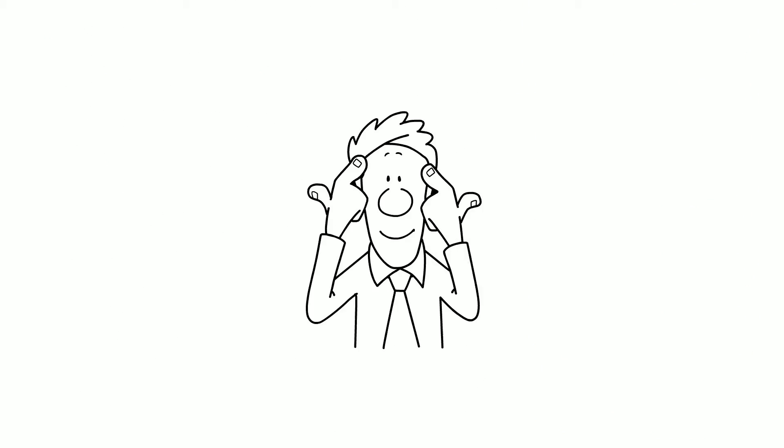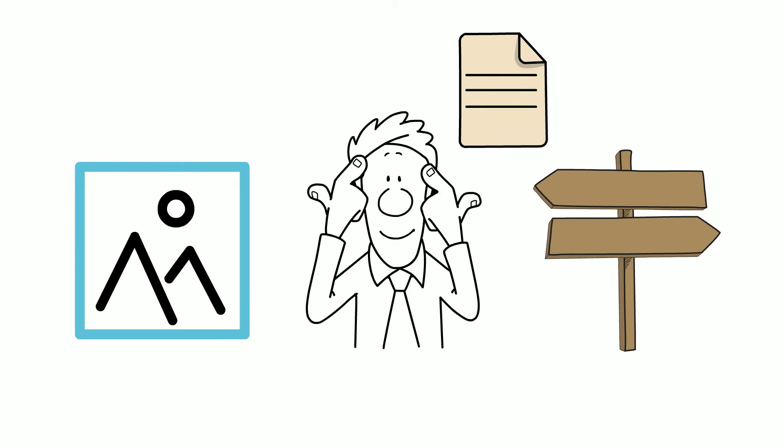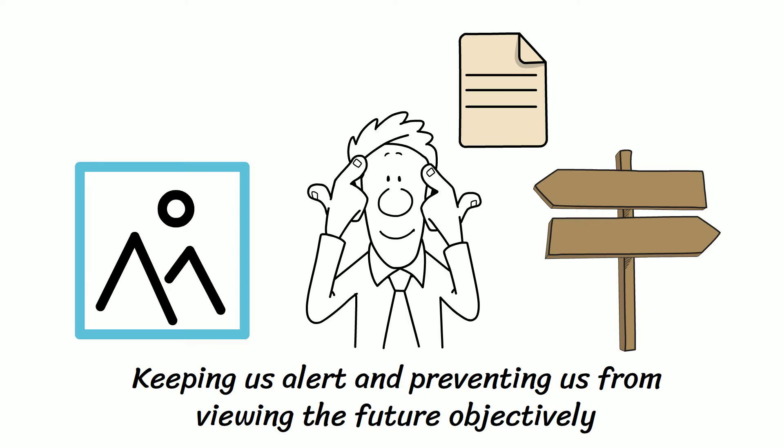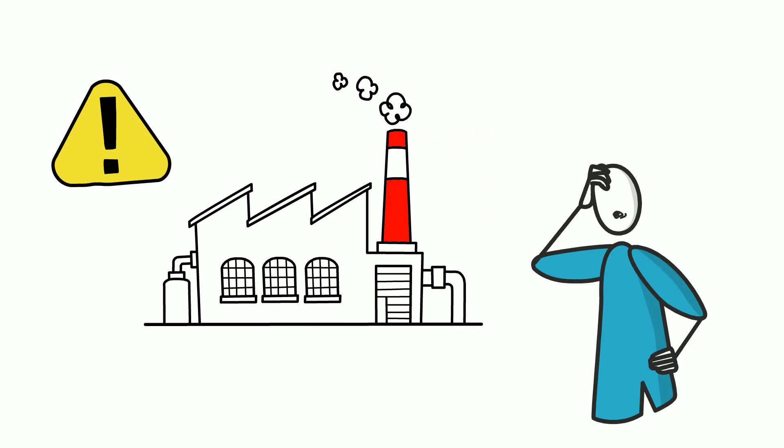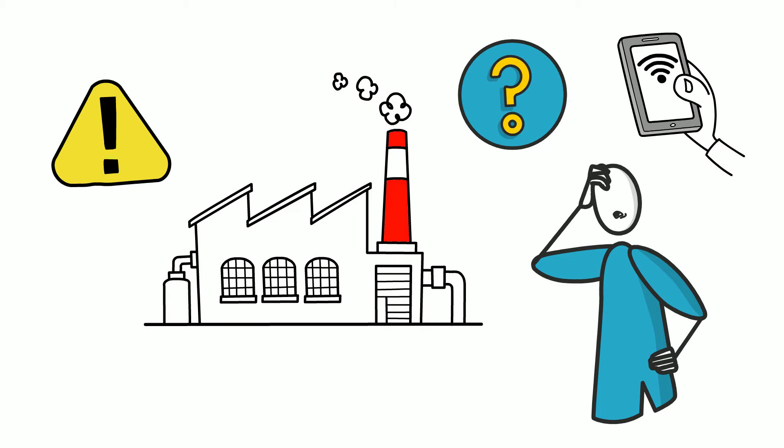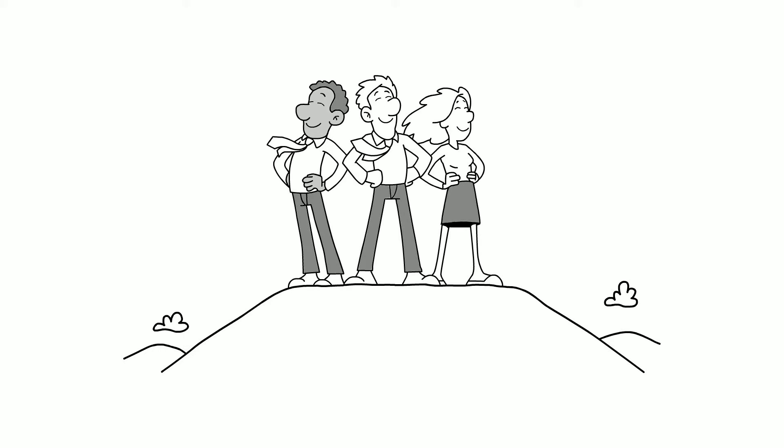The second has to do with the kind of information we receive. We are bombarded with images and scenarios that feed the amygdala, keeping us alert and preventing us from viewing the future objectively. But if we look at the statistics, we see that the industrialized world has never been safer. The future is brighter than what our brains and the media would have us believe.